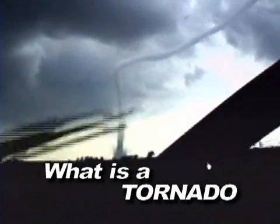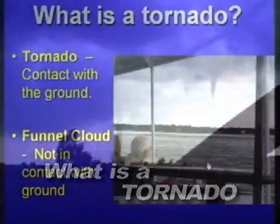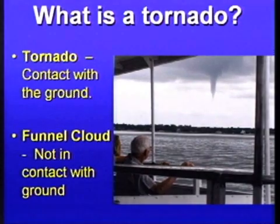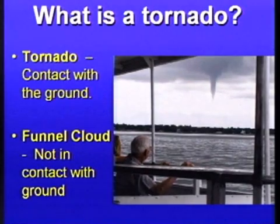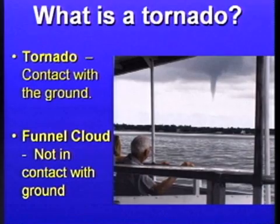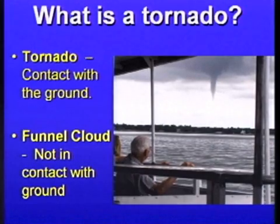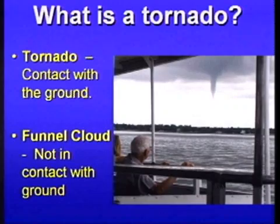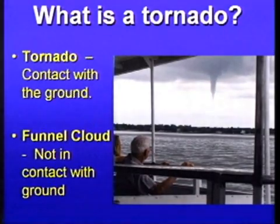What is a tornado? The picture you see there is actually right out here in the Charleston Harbor. It's a picture of a funnel cloud taken from one of the boats as they're going out to Fort Sumter. A funnel cloud is a rotation inside a storm or a rain shower that doesn't make it all the way to the ground. A tornado does make it all the way to the ground.